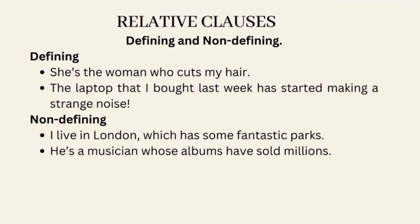Non-defining relative clauses give us extra information about something that is already clear or known. They are not essential for the meaning of the sentence and are usually separated by commas. For example: 'I live in London, which has some fantastic parks' — which gives us extra information about London. 'He's a musician whose albums have sold millions' — whose gives us extra information about him.